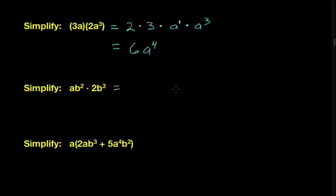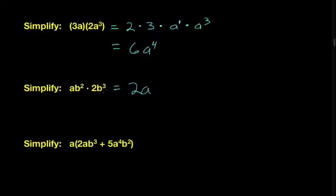For the second example, I'll put the coefficient first. We have 2 times a times b squared times b cubed. The two b terms have like bases: b to the 2 times b to the 3 is b to the 2 plus 3, which is b to the 5th. So the answer is 2ab to the 5th.